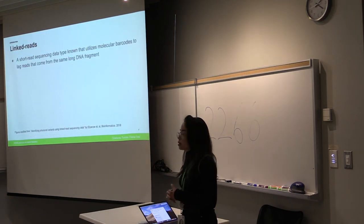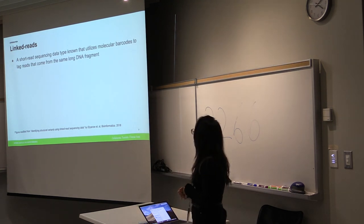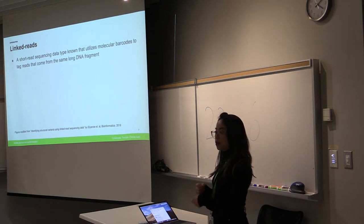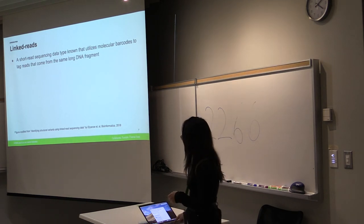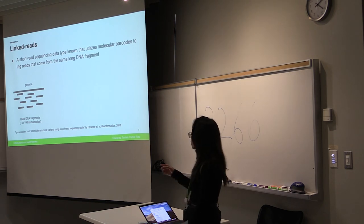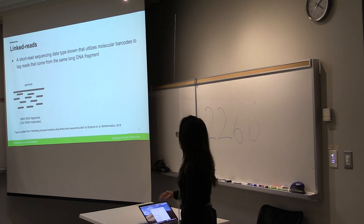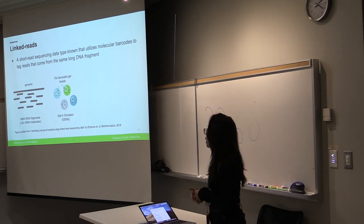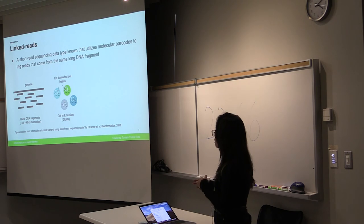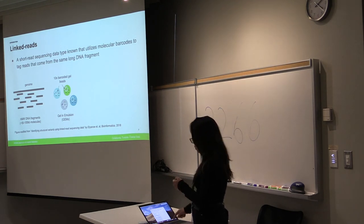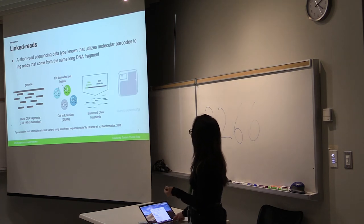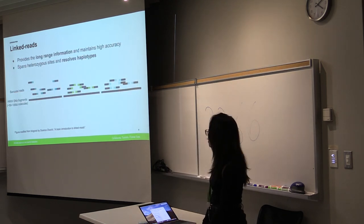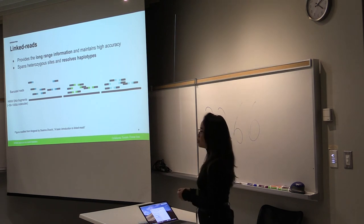So linked reads are generated by 10X genomics and at its core it's a short read sequencing technology but what's amazing about this is it utilizes molecular barcodes and from using this molecular barcode we're able to gain this long-range information that allows us to resolve these haplotypes. The way that it works is that we have the genome and these fragments into high molecular weight DNA fragments of approximately 50 to 100 kilobases. Using the microfluidics devices we would get approximately 10 of these high molecular weight DNA fragments into these beads that are enabling this attachment of 10x barcodes. Then we pass off these DNA fragments into an Illumina sequencer and we obtain reads that have this barcode which allows us to derive which DNA fragment a read is coming from and this gets us that long-range information and gets us that phasing.